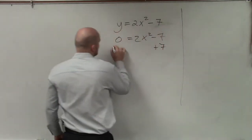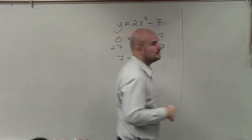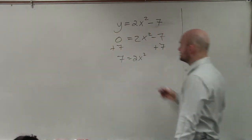So I'll add 7. I have 7 equals 2x squared. To solve for x, now I divide by 2.